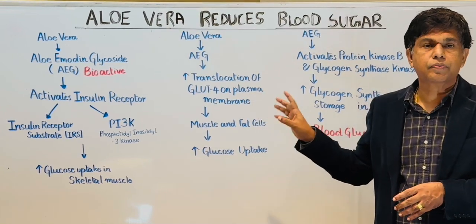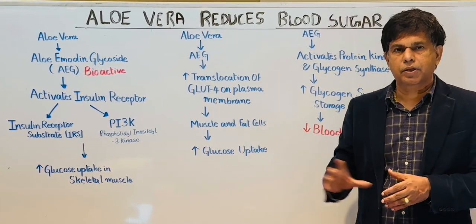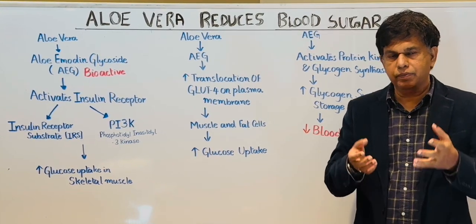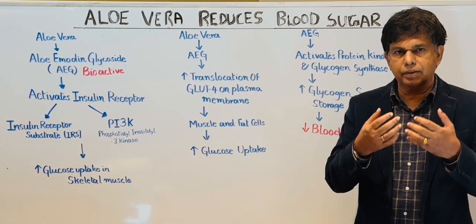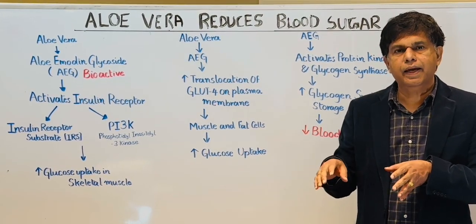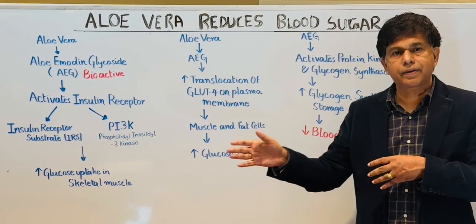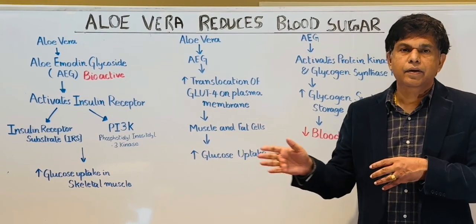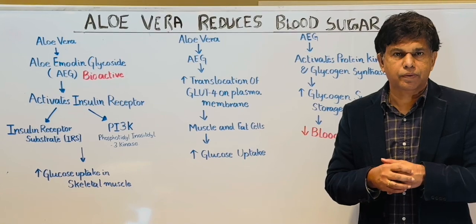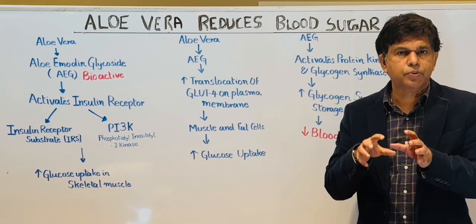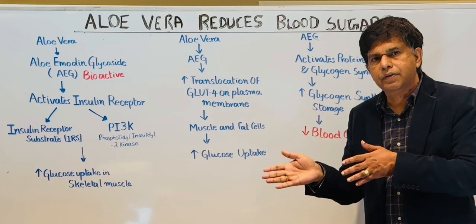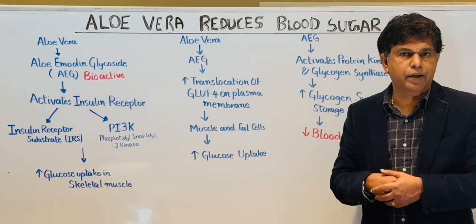So we're going to examine whether there is a role for aloe vera to decrease blood sugar. When you take food, blood glucose finally goes into the blood, and from the blood it needs to enter into the cell. In order to enter into the cell, you need insulin. Insulin is produced from the pancreas, and it helps glucose enter into the cell so it doesn't stay in the blood.